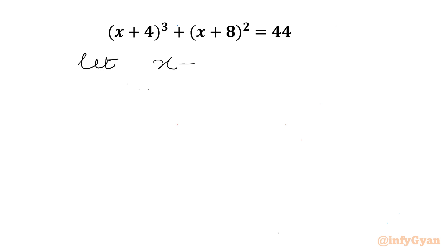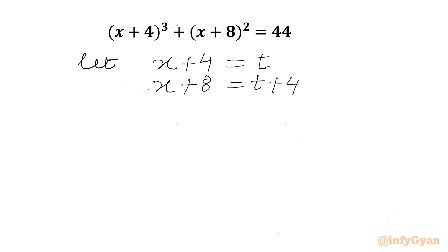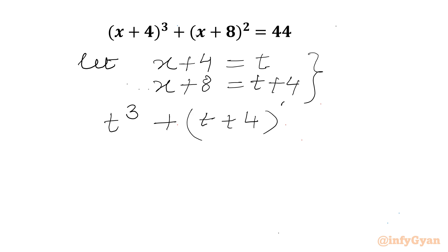We will consider x + 4 = t. So x + 8 will become t + 4. Applying the substitution, the equation will become t³ + (t + 4)² = 44.